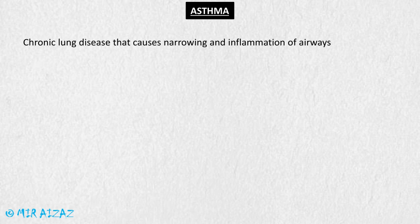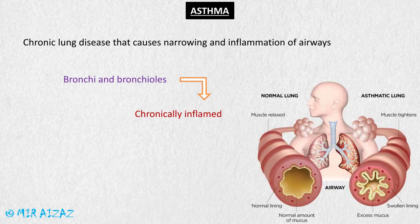Asthma is a chronic lung disease which causes the narrowing and inflammation of airways. The mainly involved airways are the bronchi and the bronchioles, which are chronically inflamed. On the left hand side is a normal airway with no inflammation and wide lumen; on the right hand side the airway is very much inflamed and there is excess mucus production which has considerably decreased the lumen of the airway.